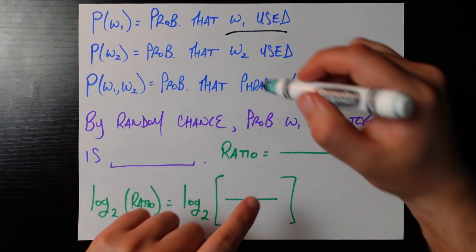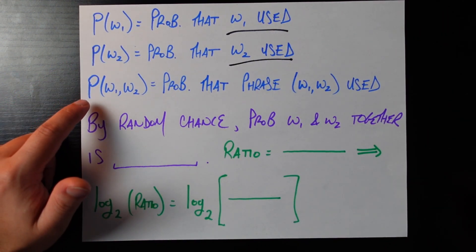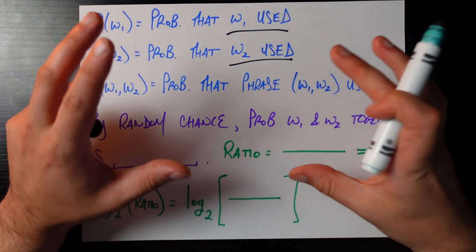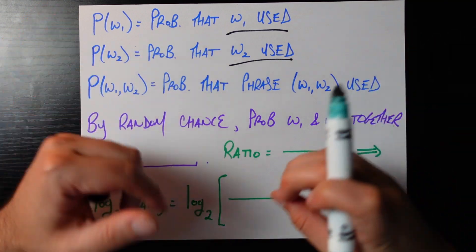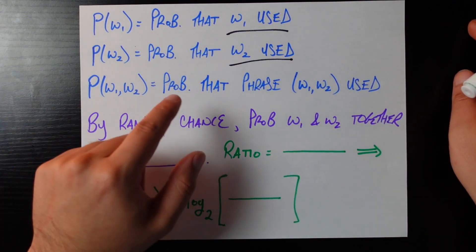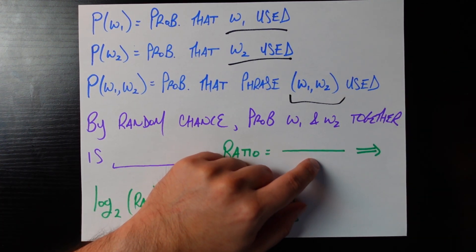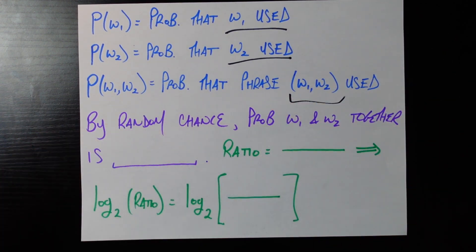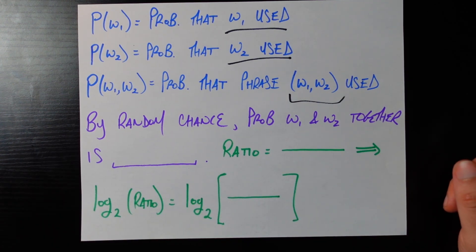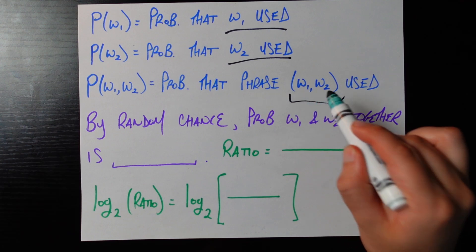The probability that the word w2 is used and now this guy p of w1 w2 is the probability that in that same large piece of training text could be like Wikipedia entries or some books that we're using for training data the probability that the phrase w1 w2 is used. So if we look at all of the bigram phrases that appear in this large piece of text what fraction of them are the phrase w1 w2.